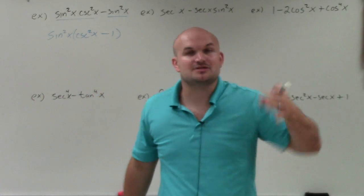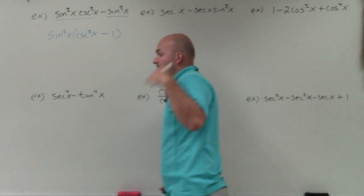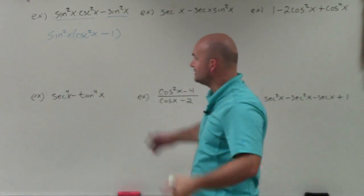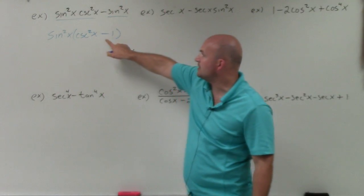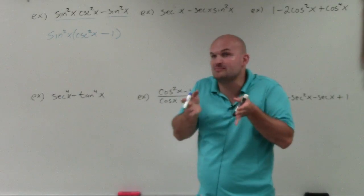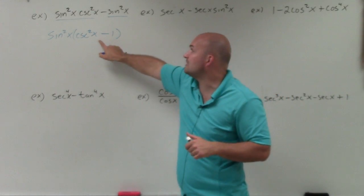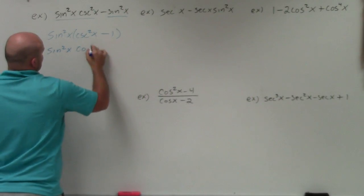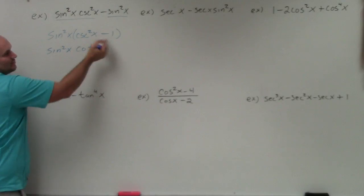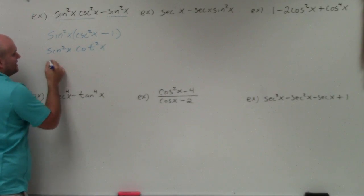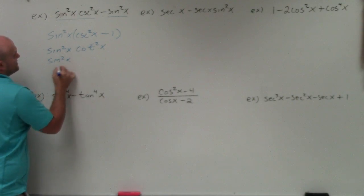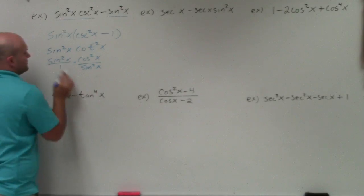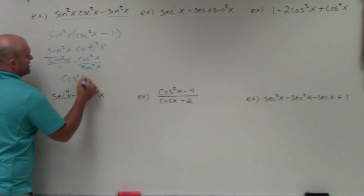We're actually factoring and simplifying. I want to see if I can rewrite cosecant squared of x minus 1 as one single term using my Pythagorean identities. And yes — by using my Pythagorean identities, I can rewrite this as cotangent squared. So I have sine squared of x times cotangent squared of x. To simplify, I rewrite in terms of sines and cosines: sine squared of x times cosine squared of x over sine squared of x. The sines divide to 1, and I'm left with cosine squared of x.